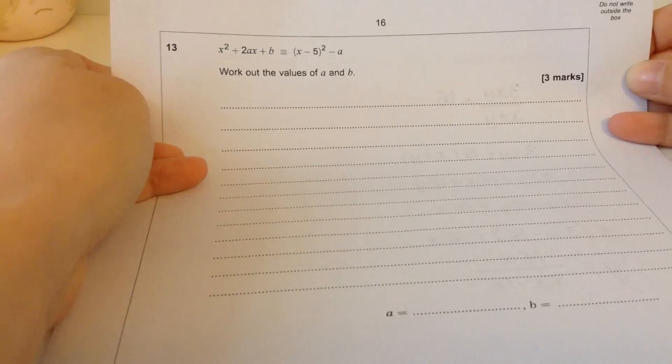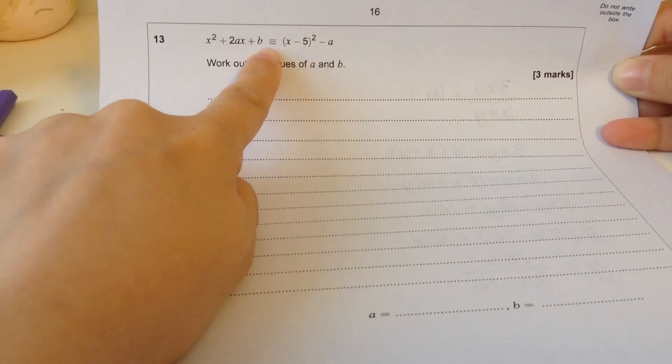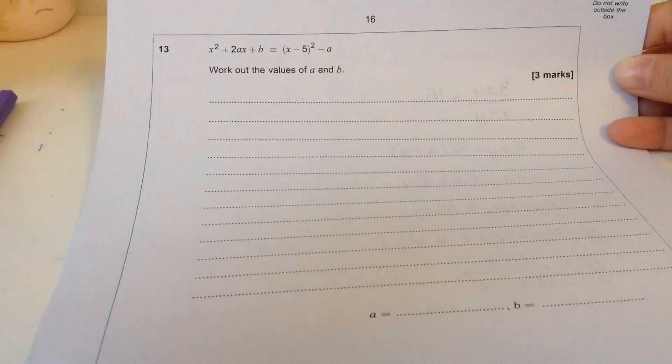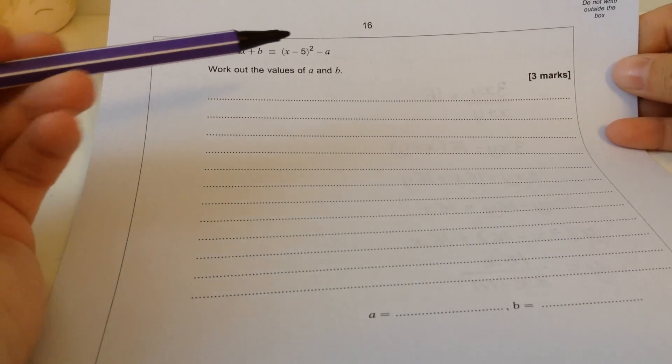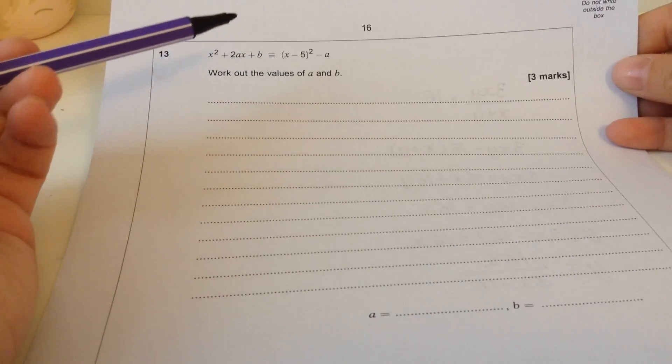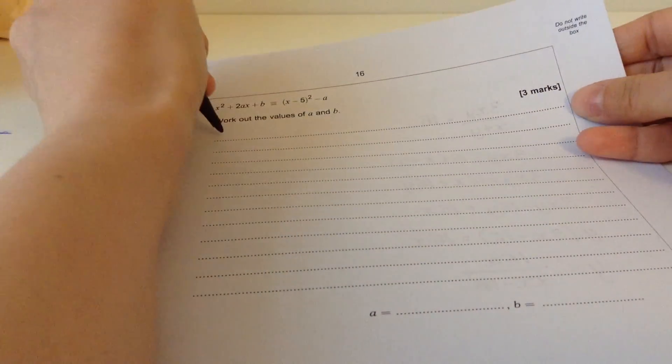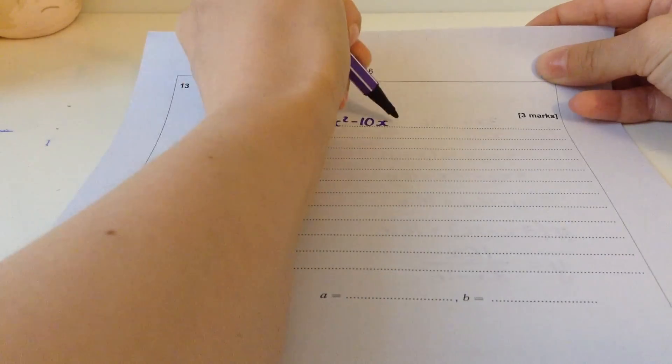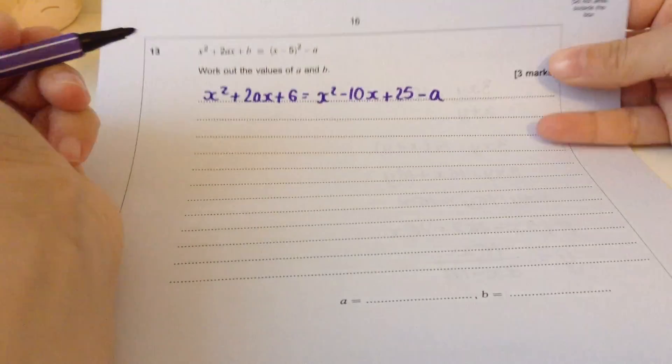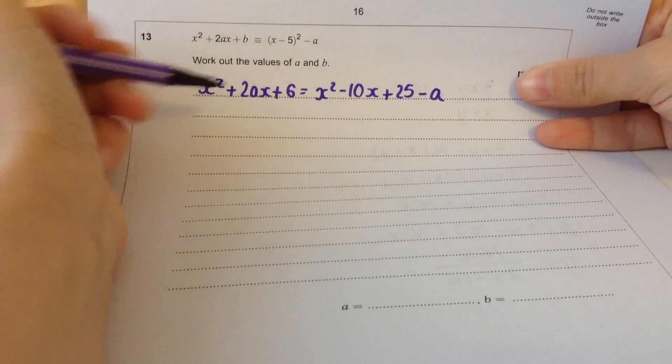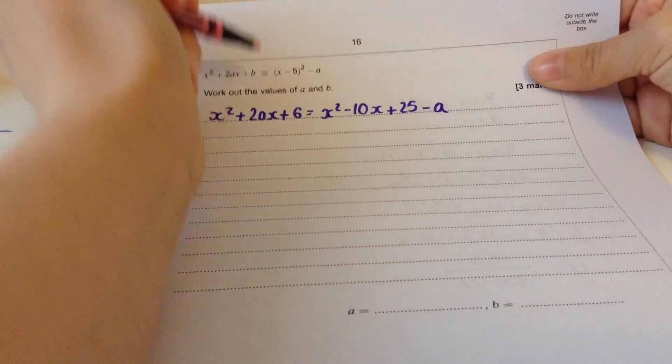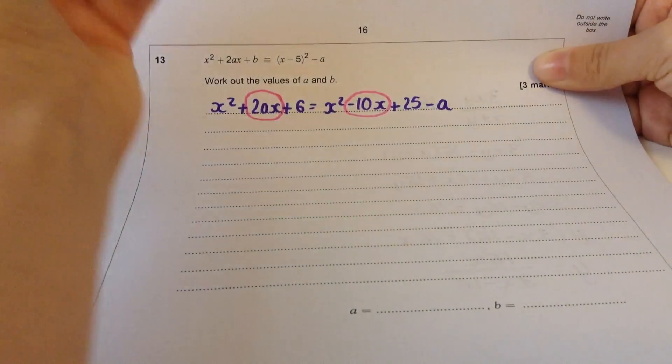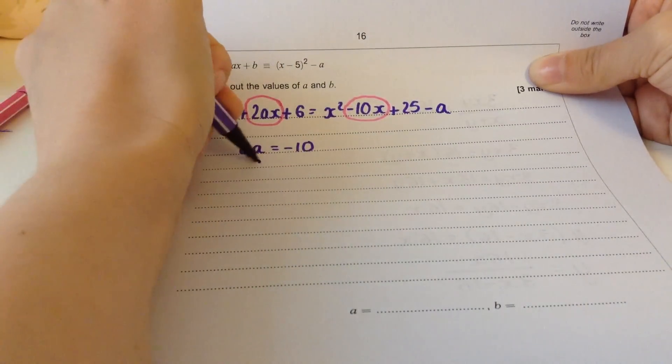Thirteen. We've got a semi-completed square. It has three lines here, which means it's an identity, which means that both sides are identically equal. So we'll work out the values of a and b. I'm thinking we should expand this side and then compare stuff. So that's going to be x squared minus 10x plus 25 minus a. If we compare the x's, 2a is going to have to equal minus 10, so a is minus 5.